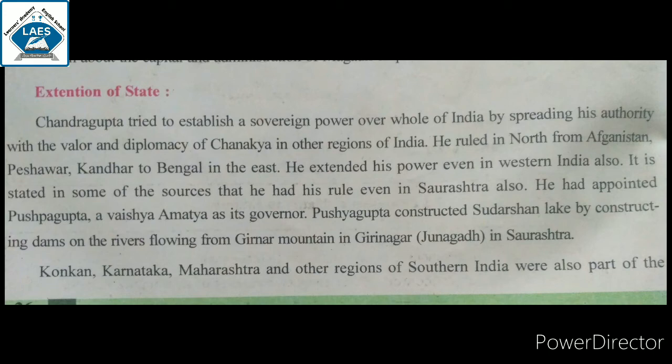It is stated in some sources that he had his rule even in Saurashtra. He had appointed Pushyagupta Vaishya as its governor. Pushyagupta constructed Sudarshan Lake by building dams on the river flowing from Girnar mountain in Girinagar, meaning Junagadh in Saurashtra.